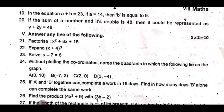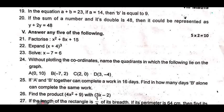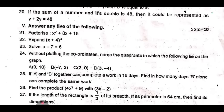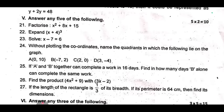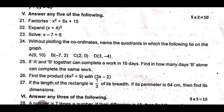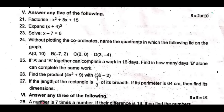Question 25: If A and B together can complete a work in 16 days, find in how many days B alone can complete the same work. Question 26: find the product (4x² + 9) with (3x - 2).